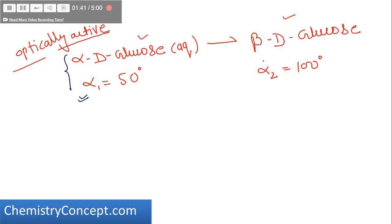Because the rotation of beta-D-glucose is higher than alpha-D-glucose. And if I start with beta-D-glucose, dissolve it into water and leave it for some time, the beta-D-glucose will start converting into alpha-D-glucose.